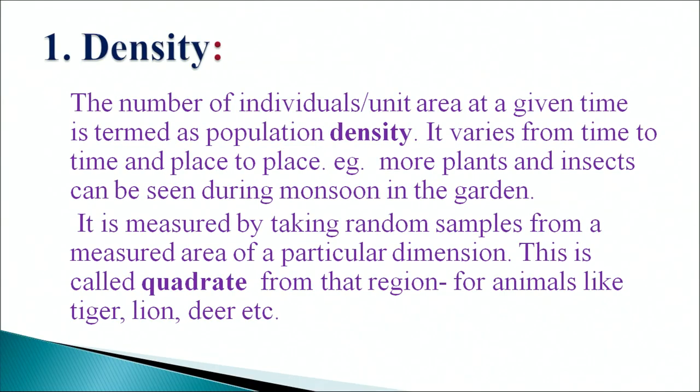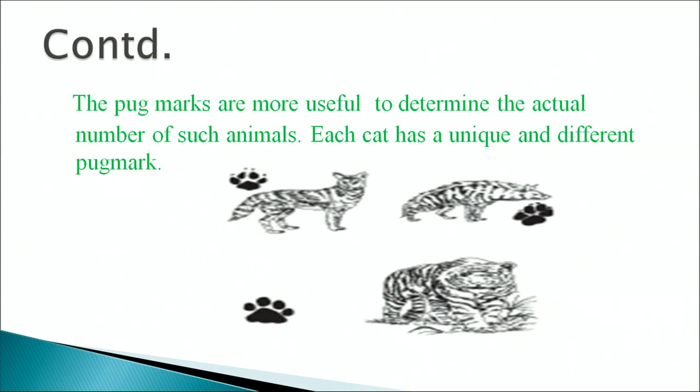Coming to density. The number of individuals per unit area at a given time is termed population density. It varies from time to time and from place to place. For example, more plants and insects can be seen during monsoon in the garden. It is measured by taking random samples from a measured area of a particular dimension, called a quadrat. For animals like tiger, lion, deer, etc., pug marks are more useful to determine the actual number of such animals.